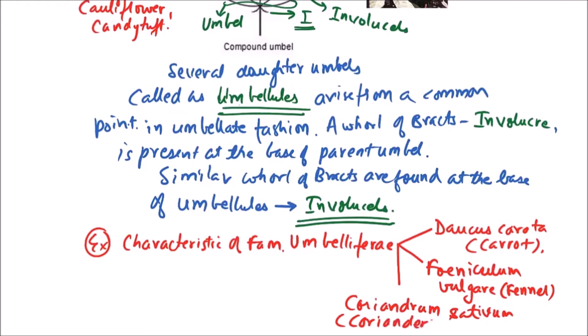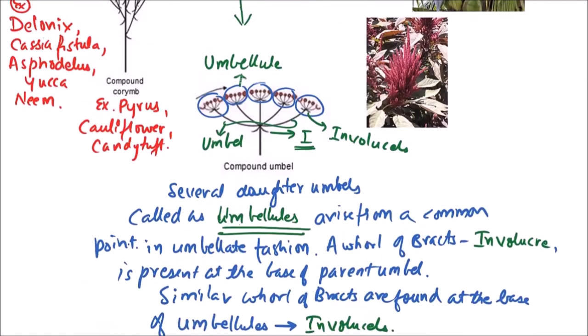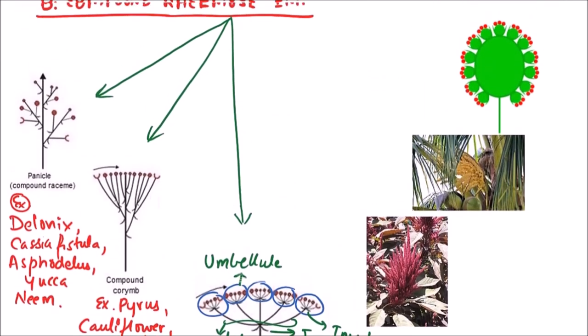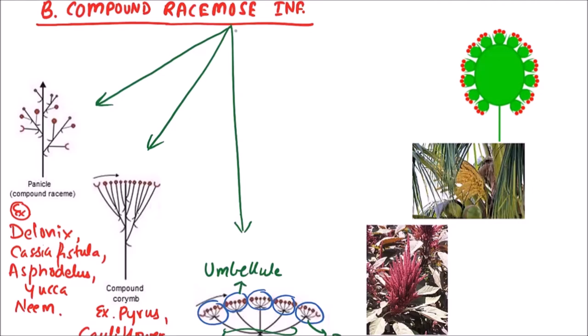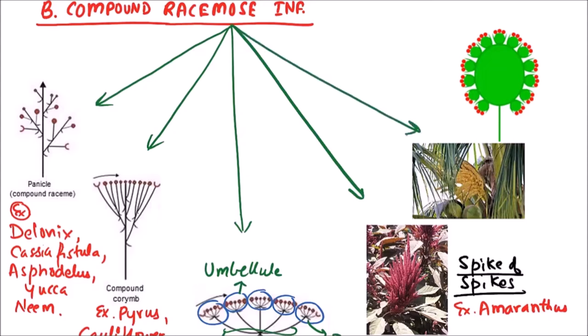The next type of compound racemose inflorescence is spike of spikes. The examples include Amaranthus. Next one is compound spadix. The examples include date and coconut.